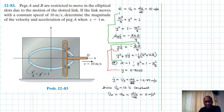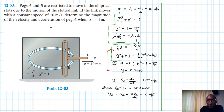Now let's find the y-acceleration. Given the second derivative equation: ẏ² plus y·ÿ equals minus 0.25 times (ẋ² plus x·ẍ). We will substitute the known values to solve for ÿ, which equals ay.